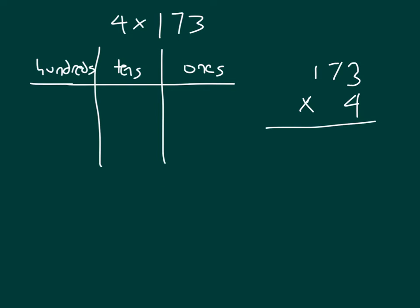The first problem we will look at is 4 times 173, and as stated within the objective, we'll be using the standard algorithm to solve these problems. Over here on the right-hand side, I will use the standard algorithm and write that vertically there. On the left-hand side, I'm showing you how a place value chart shows this problem of 4 times 173.